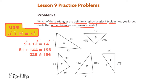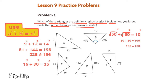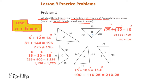Since the square root of 50 squared plus the square root of 50 squared does equal 10 squared, triangle B is a right triangle. Since 16 squared plus 30 squared does not equal 35 squared, triangle C is not a right triangle.